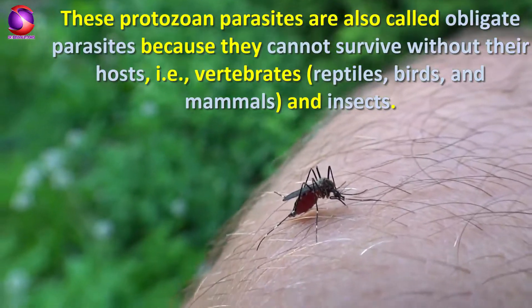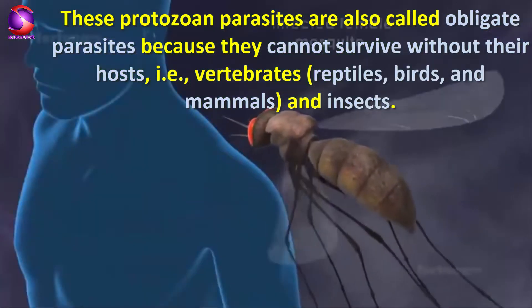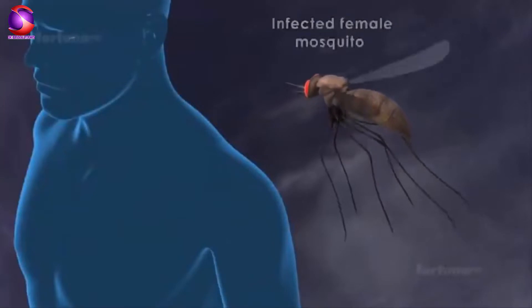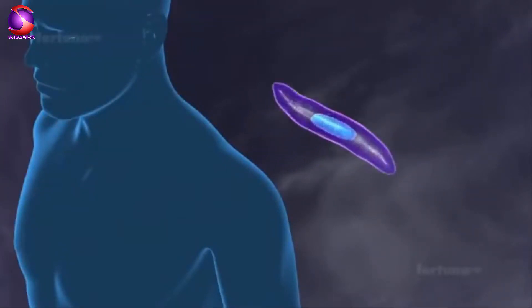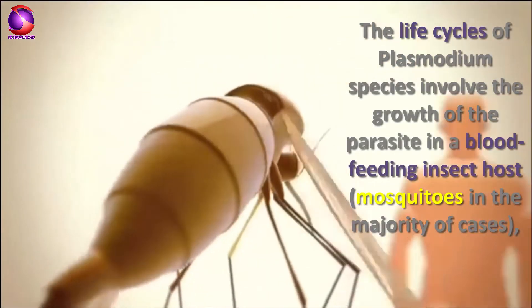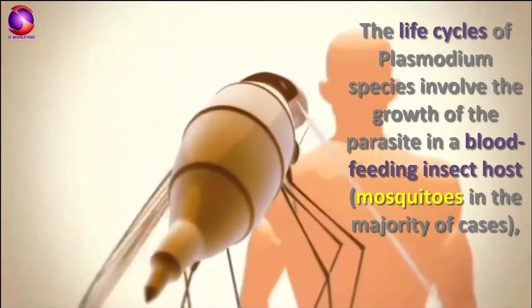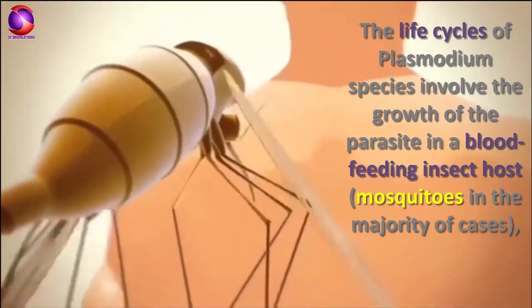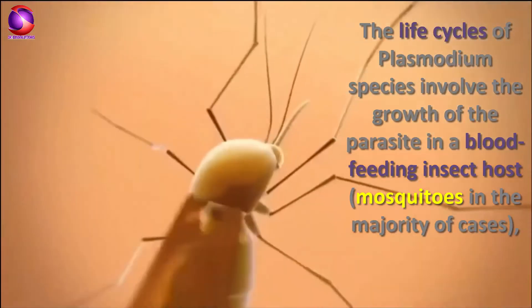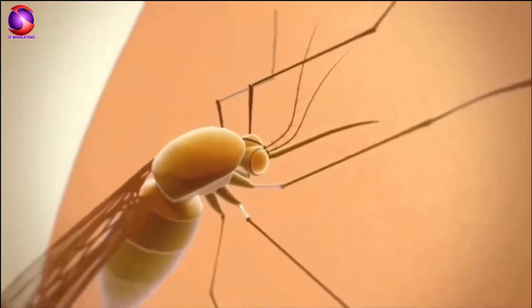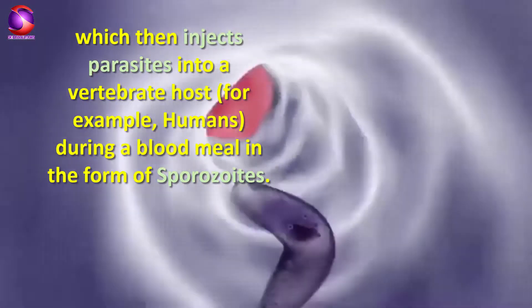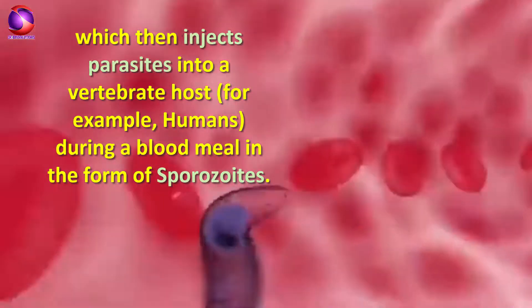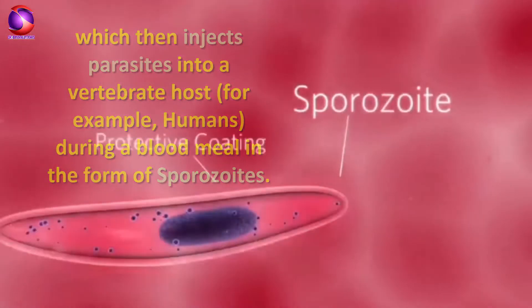mammals and insects. Before going into the classification, examples, and features, we will look into the life cycle of Plasmodium species. The life cycles involve the growth of the parasite in a blood-feeding insect host — mosquitoes in the majority of cases — which then injects parasites into a vertebrate host, for example humans, during a blood meal in the form of sporozoites.